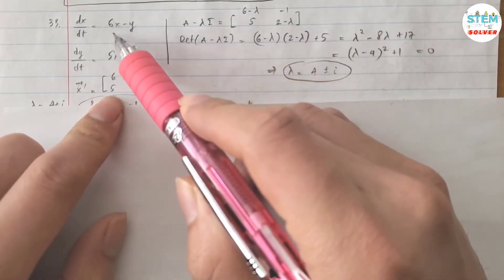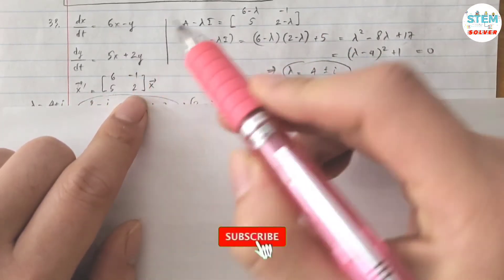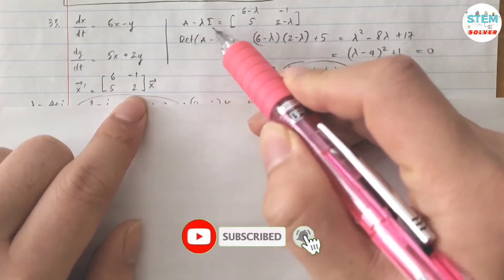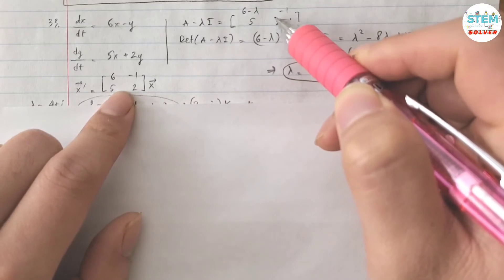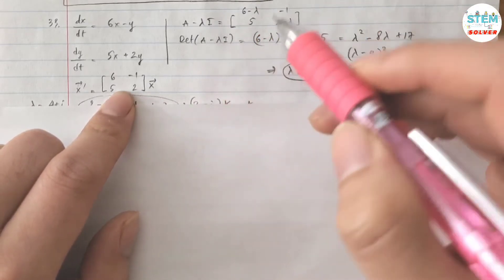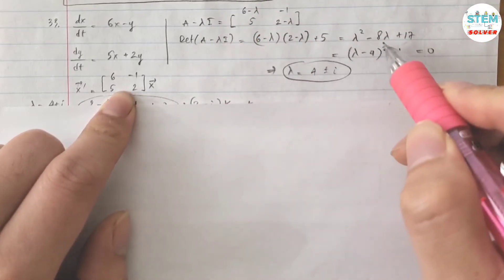Basically you just take the leading coefficient of x and y, put it into a matrix. Then you find A - λI, so let's call this matrix A and then subtract with λI, you will get this matrix. Then find the determinant of it, you will get this, simplify this, or distribute this out and simplify it. You will get this.